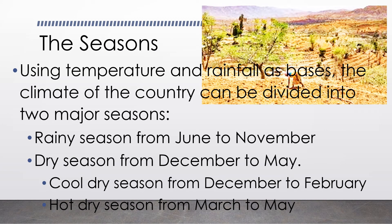Using temperature and rainfall as a basis, the climate of the country can be divided into two major seasons: rainy season from June to November and dry season from December to May. The dry season can still be subdivided into two: the cold dry season from December to February, and the hot dry season from March to May.